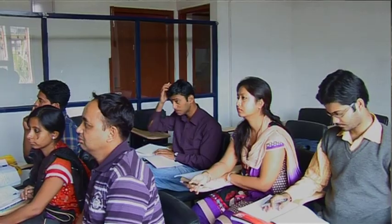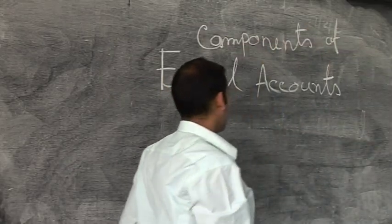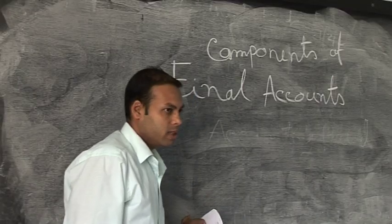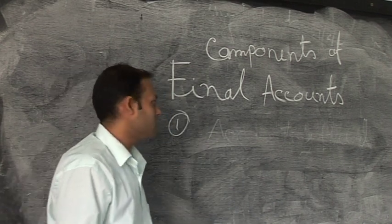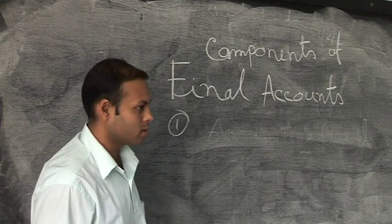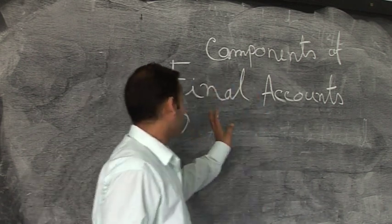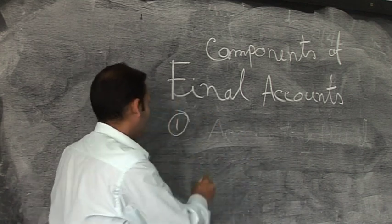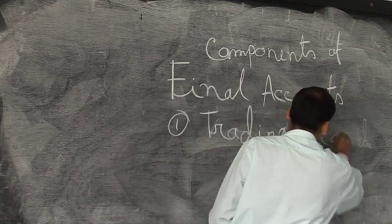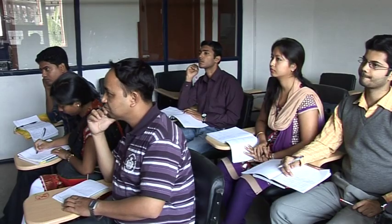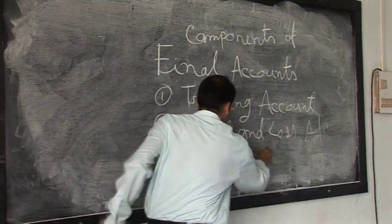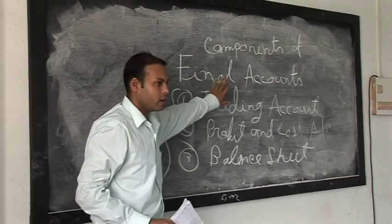So what are the components of final accounts? There are three financial statements which are called final accounts. A businessman has to prepare all three statements to complete his final account. The first component is trading account, the second is profit and loss account, and the third is balance sheet. The business will have to prepare all three statements to complete his final account at the end of the accounting period.